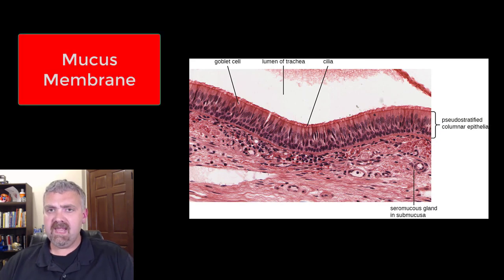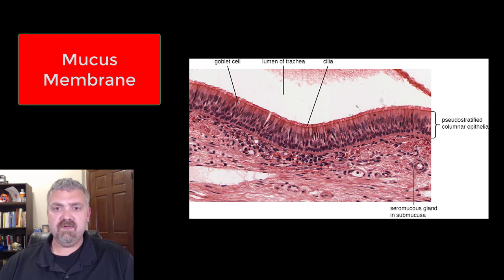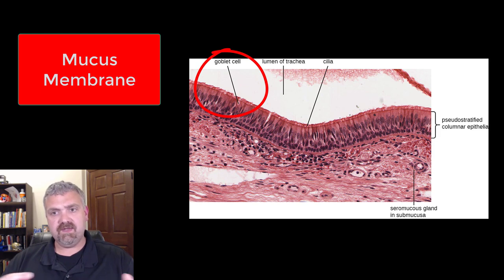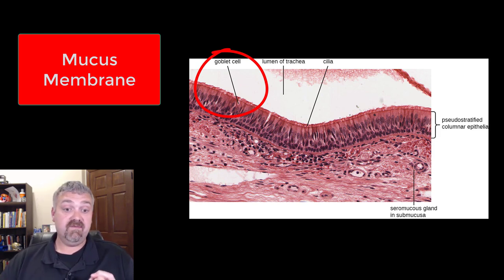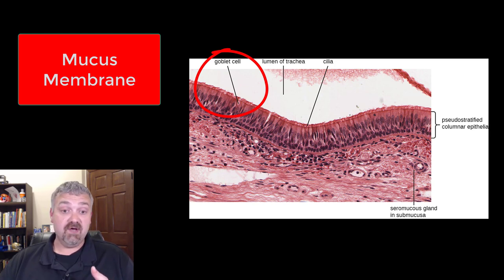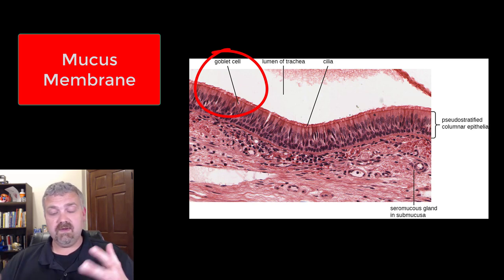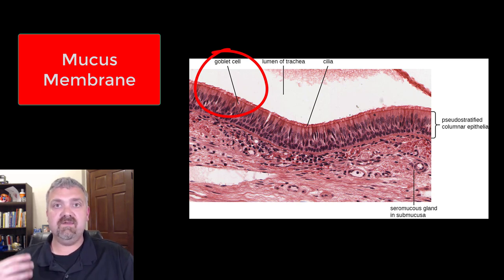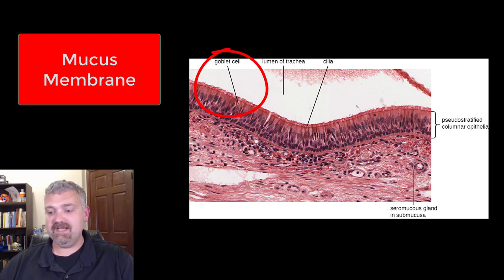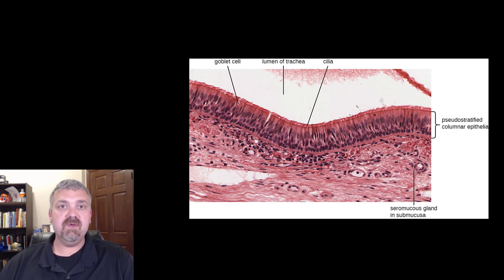Here we see a mucous membrane. We have the epithelial cells and the key thing there is the goblet cells. Goblet cells are going to produce the mucus that coats the outside of this mucous membrane. That mucus is going to have secretory IgA antibodies. Mucus itself is going to slow microbial growth and slow their movement, keeping our passageways lubricated and moistened, but also playing a role in keeping out pathogens.